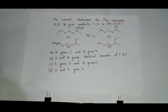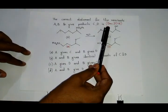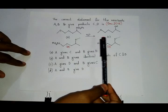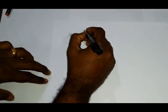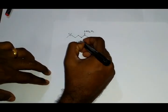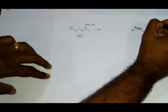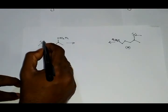Hey guys, in this video we will solve a question from CSIR NET December 2016. The correct statement for the reactants A and B to give products C and D is: In reactant A, the lone pair of electrons on oxygen will attack here and this group will leave.